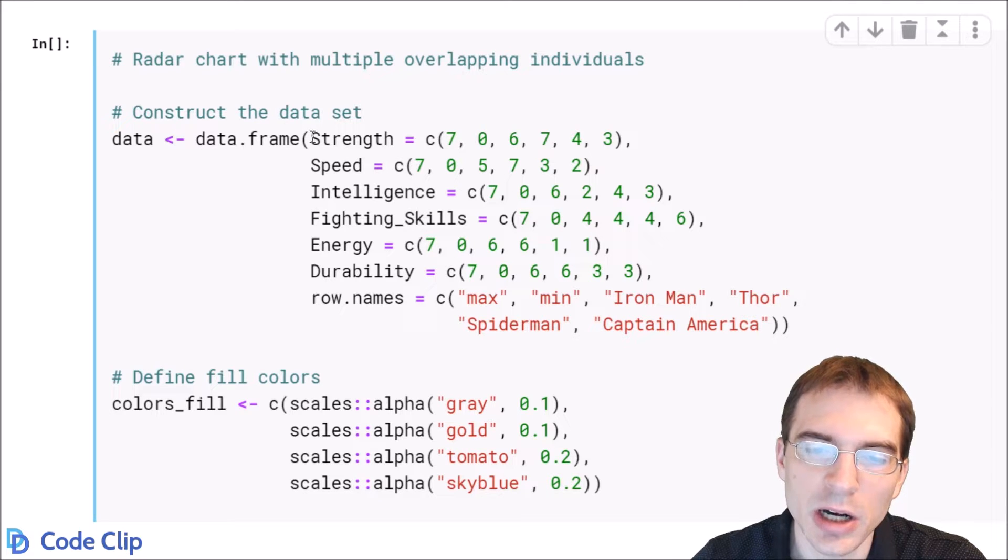So here we're going to make columns again. Let's start with the maximum, the minimum, and then after that, we're putting in values for each of the different characters that we want to include. So again, we're going to include Iron Man as the third row, but then we're going to include three more characters.